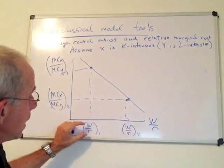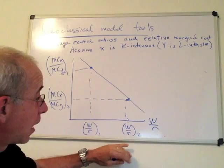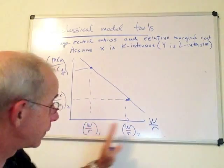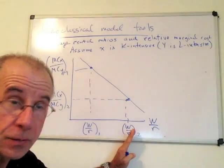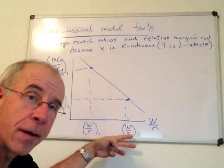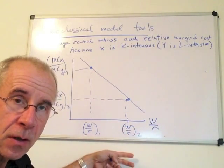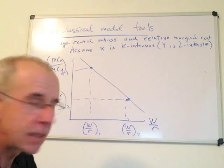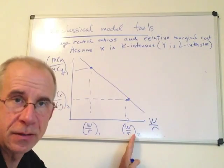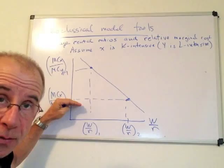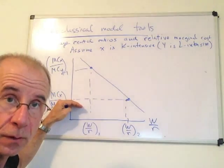It could be that the cost of capital went down. That would give you the same effects on the ratios. It could be that both have gone up, but that the wage rose faster than the cost of capital. What matters is what happens to the relative cost of labor. And when that happens, the relative cost of the capital-intensive good is going to fall.